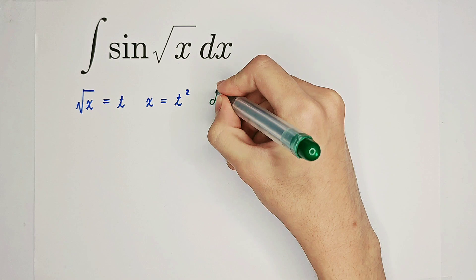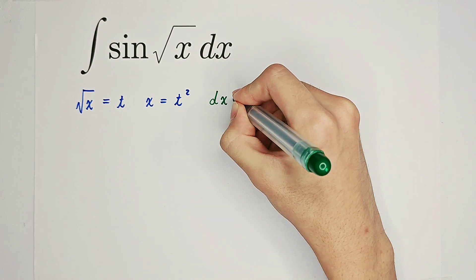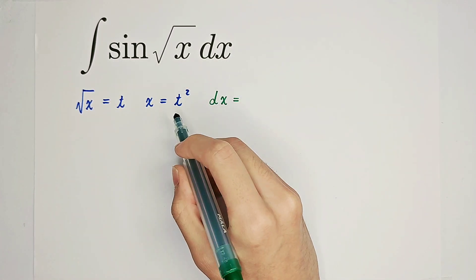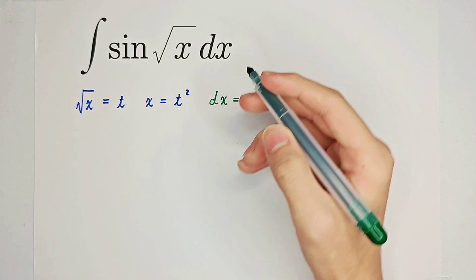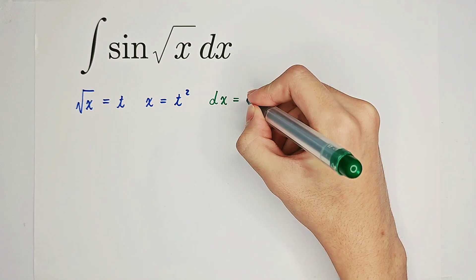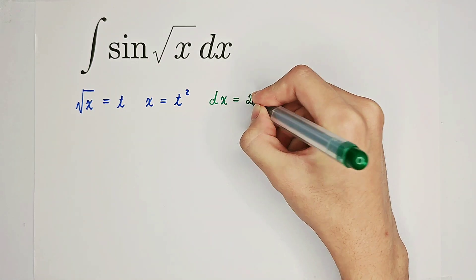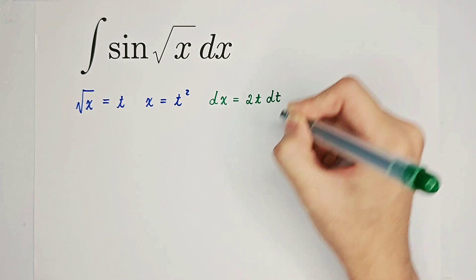What is dx? dx is dt squared, and dt squared - the derivative of t squared - is 2t. So it's 2t times dt.